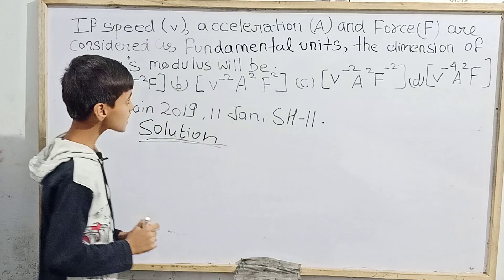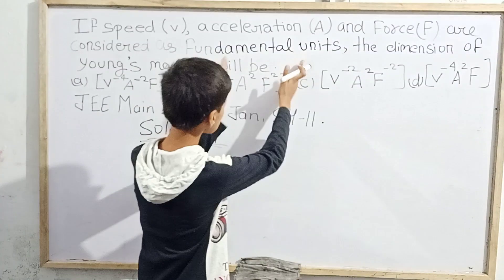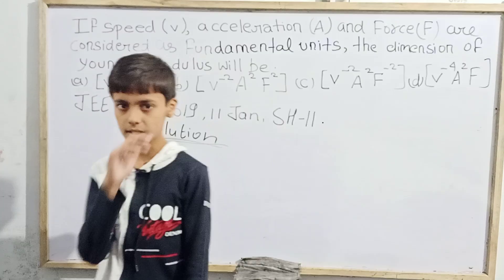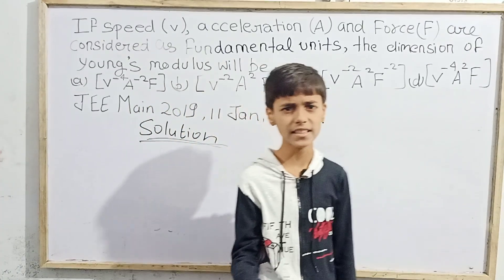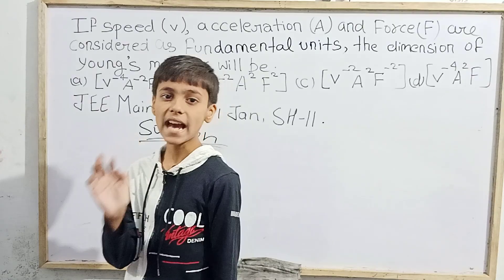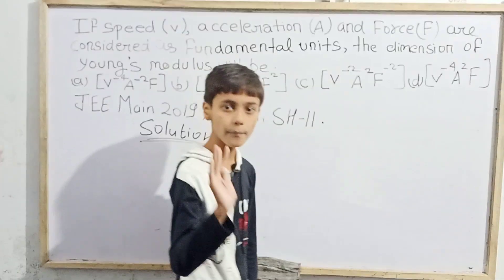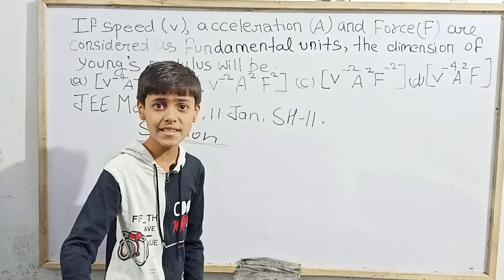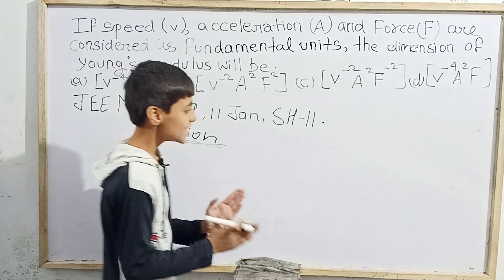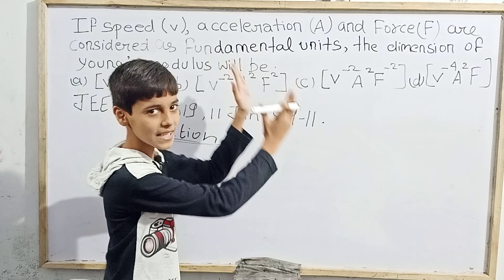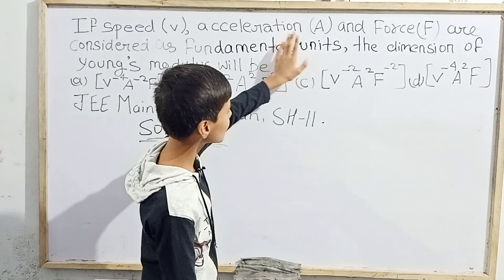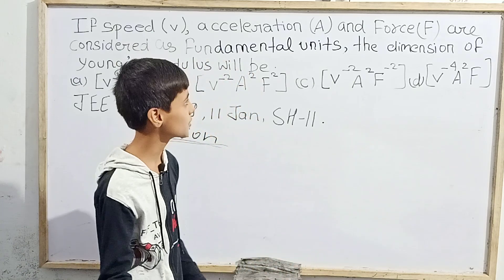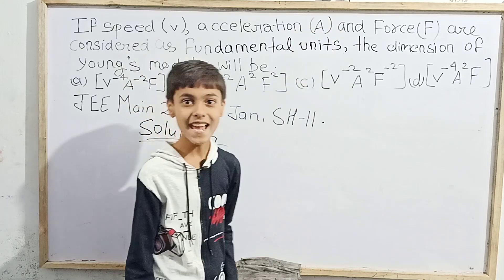We know there are seven fundamental units or base quantities: length, mass, time, electric current, thermodynamic temperature, amount of substance, and luminous intensity. But this question says we do not take those as fundamental units. Instead, we have to change the approach — we must take speed, acceleration, and force as the fundamental units, even though they are generally derived units.